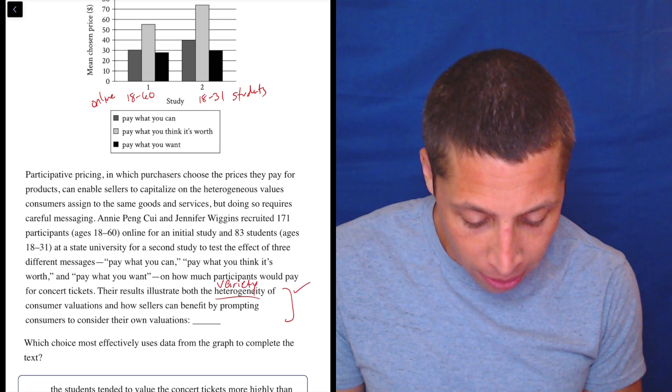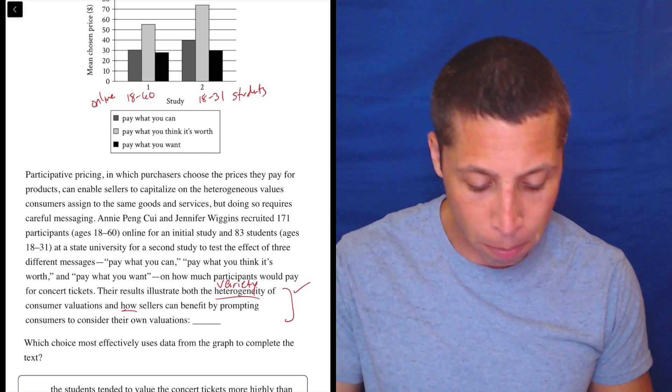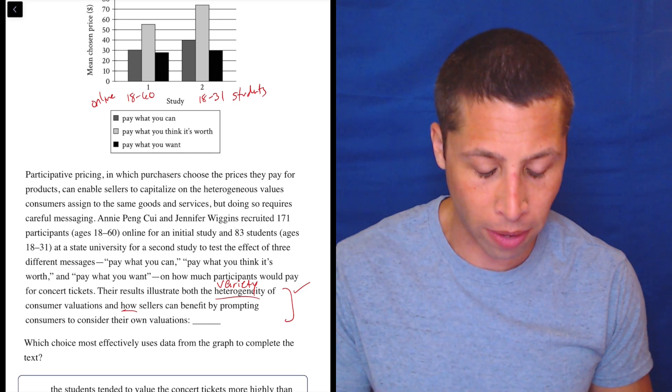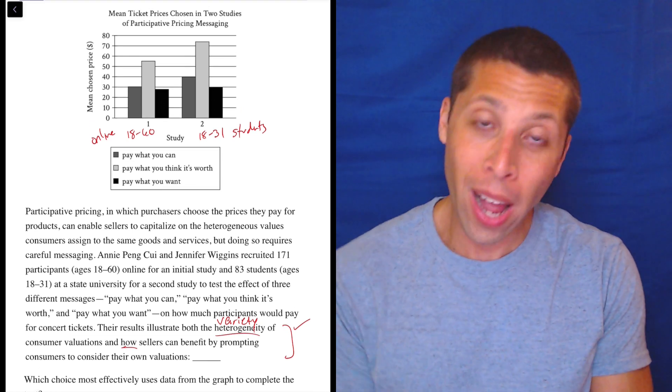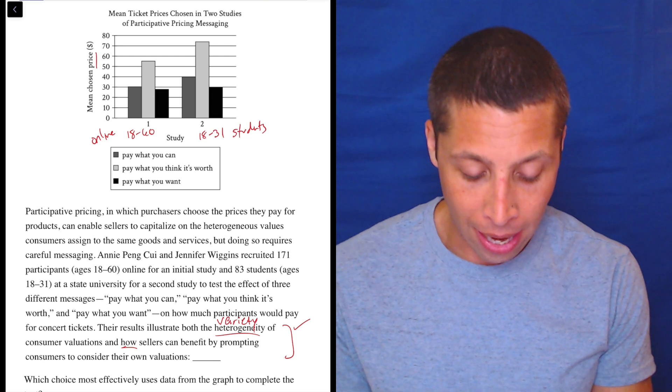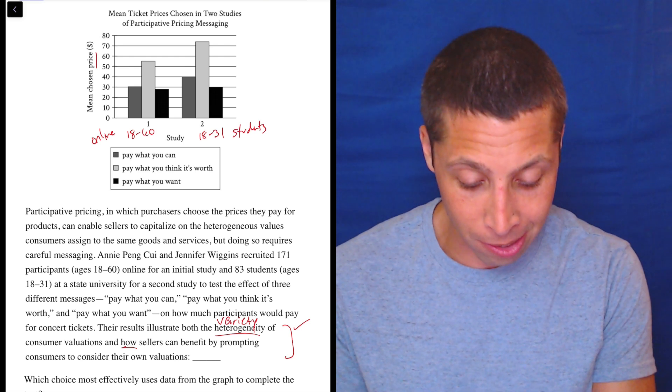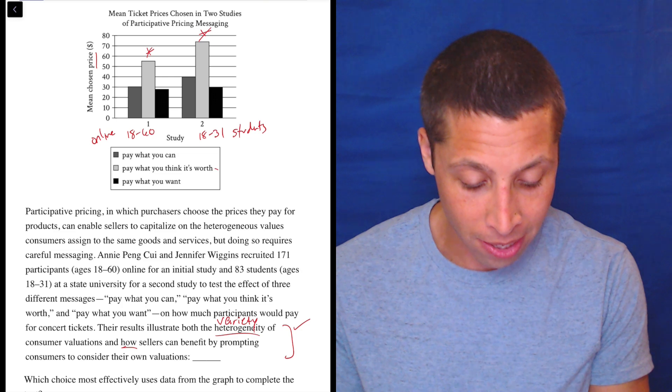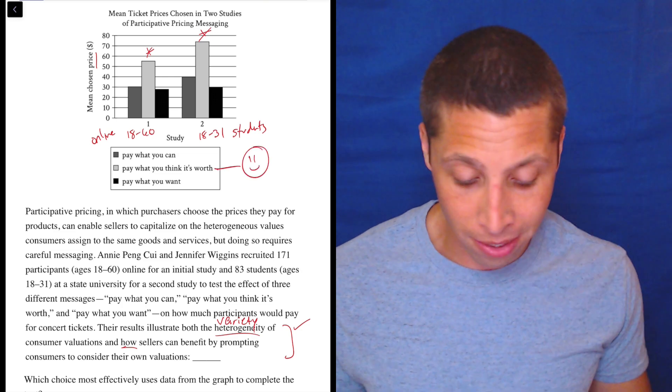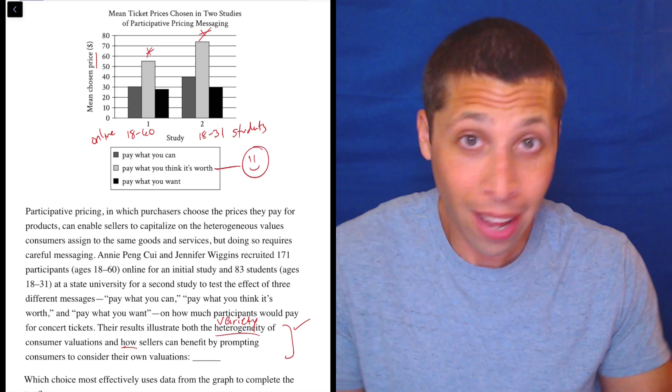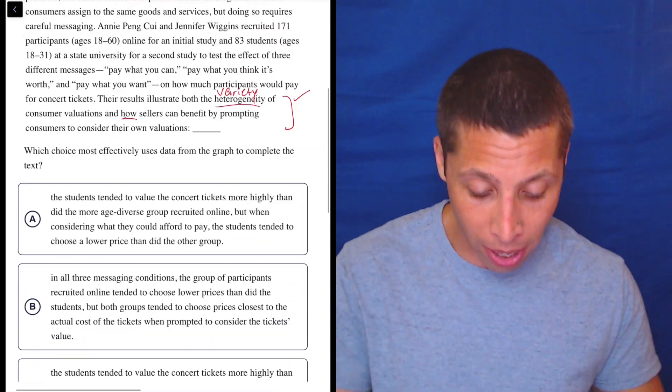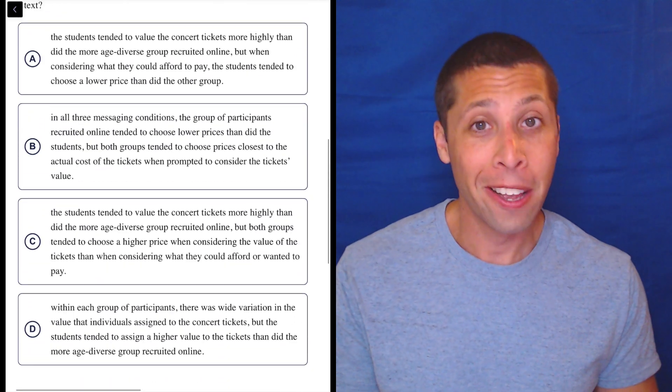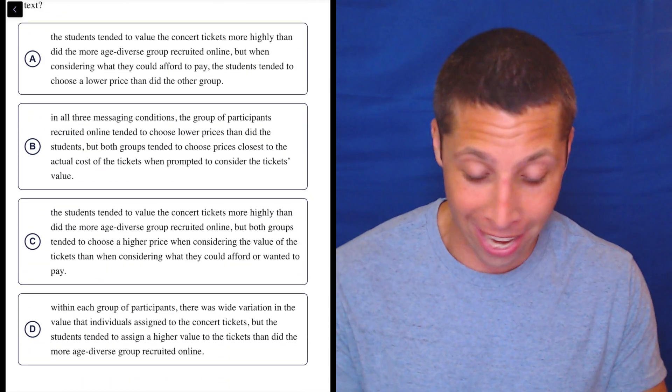And then the second part right here, how sellers can benefit by prompting consumers to consider their own valuations. Well, if you're the seller and the y-axis is the price, I guess this is the good thing right here and here. That's the highest price. So, maybe this is what we want. Pay what you think it's worth. I don't know. Don't waste a lot of time trying to imagine what the blank is going to be. We got four answers. Now, they're long, but let's see what we can get out of this.